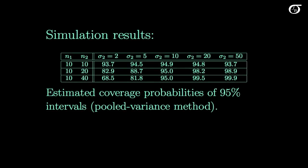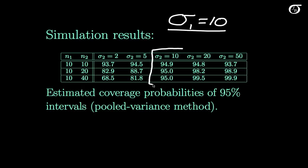In this simulation, the standard deviation of population 1 is fixed at 10. In this column, the standard deviation for population 2 is also 10, so sigma1 and sigma2 are equal — population standard deviations and variances are equal. The values in the table are very close to 95%, meaning the procedure is working very well. In theory these values would be exactly 95%, but with 100,000 simulations there's still a little sampling variability. The pooled variance t-procedure works perfectly when the standard deviations are equal.